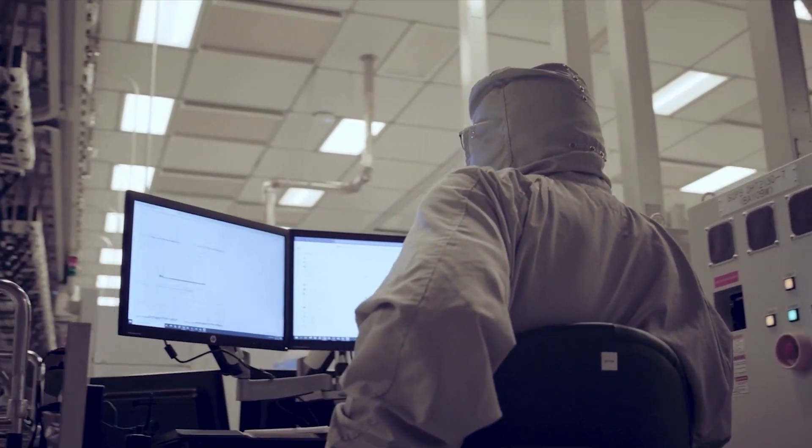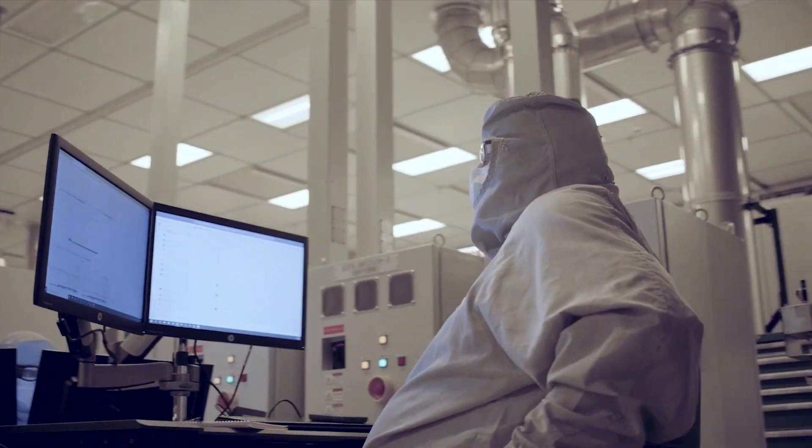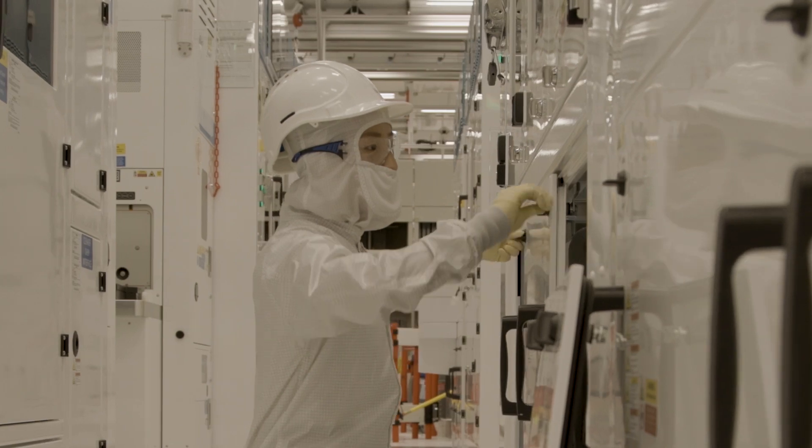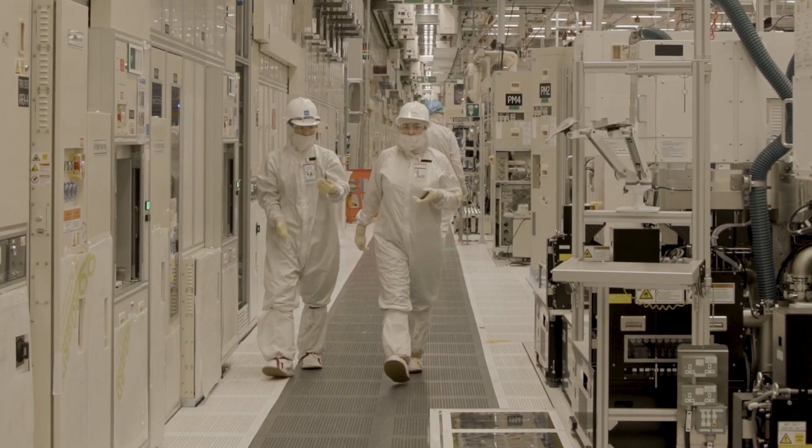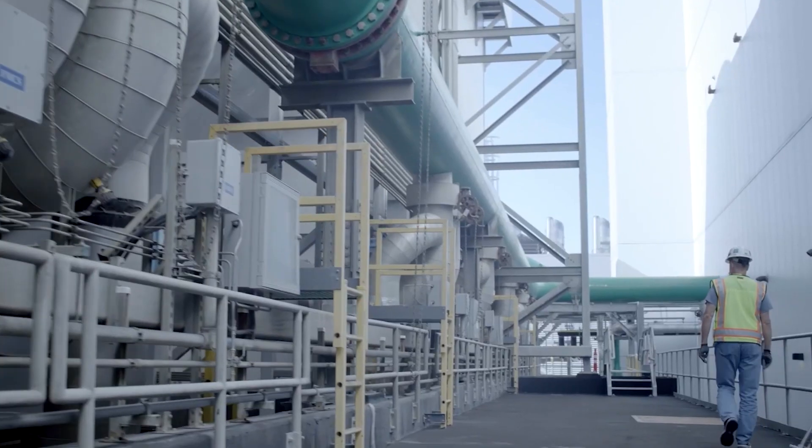Engineering and administrative controls, as well as personal protective equipment (PPE), work in concert throughout these levels to keep people, products, and the environment safe.